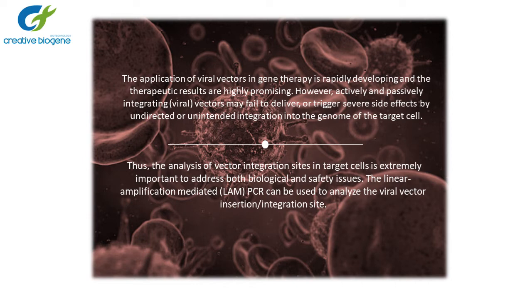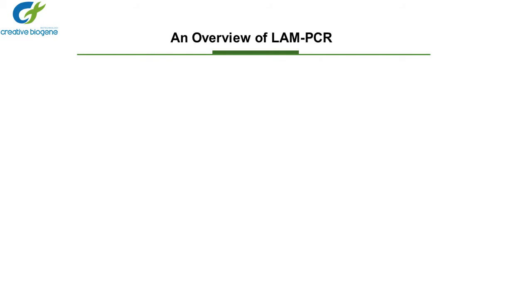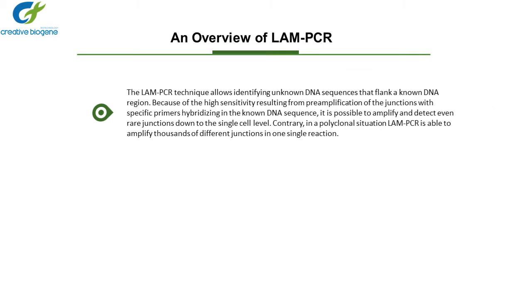The Linear Amplification Mediated PCR can be used to analyze the viral vector insertion or integration site. The LAM-PCR technique allows identifying unknown DNA sequences that flank a known DNA region. Because of the high sensitivity resulting from pre-amplification of the junctions with specific primers hybridizing in the known DNA sequence, it is possible to amplify and detect even rare junctions down to the single cell level.